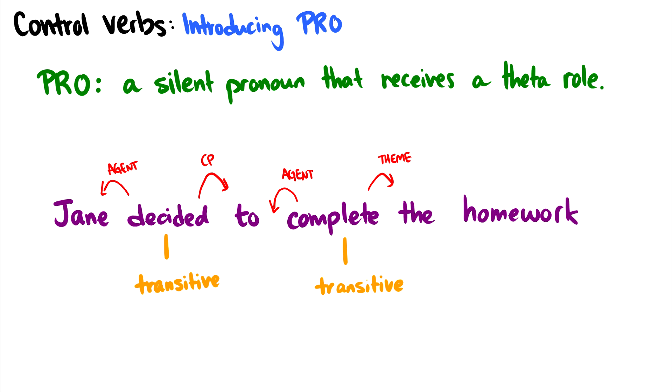So the question is, what is the agent of complete? The agent of decided, Jane, is clearly the decider here, so she's the agent of decided, but she's also the agent of complete. Jane is the one completing the homework. So the question is, well, we can't have Jane receiving two theta roles, so we can't have Jane starting both in complete and decided. And even more importantly, according to the VP internal subject hypothesis, Jane has to start out in the spec VP of decided as well as the spec VP of complete. So how do we deal with this?